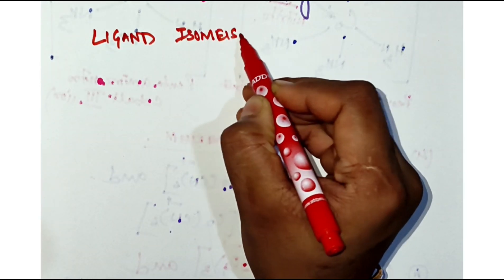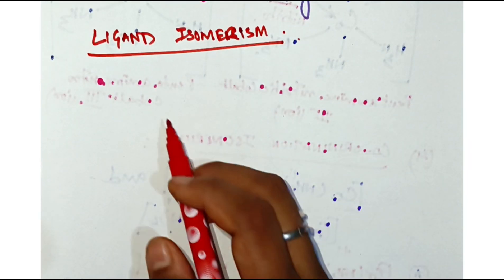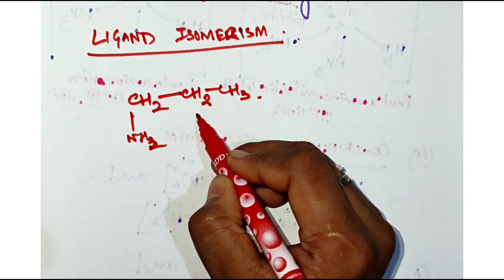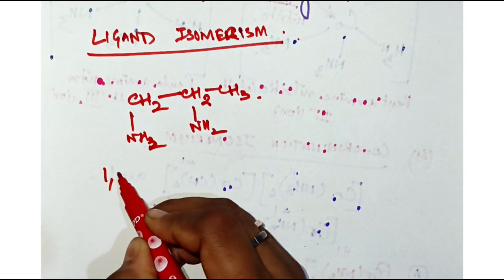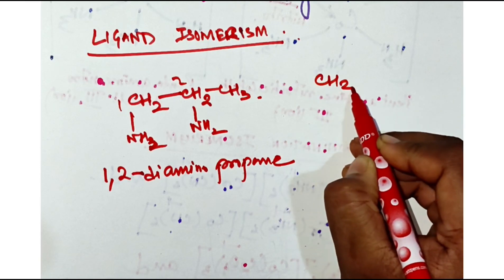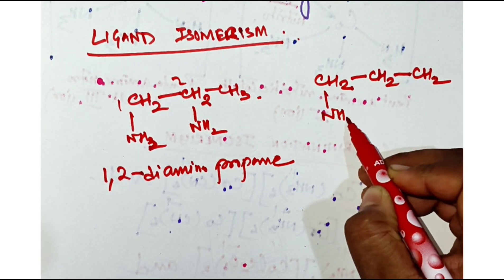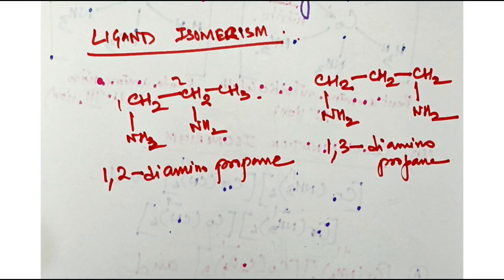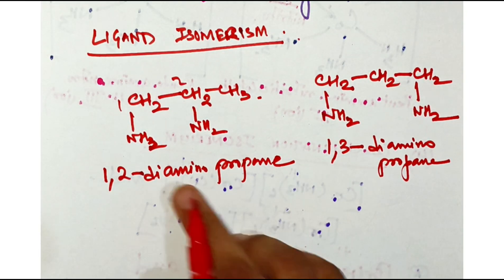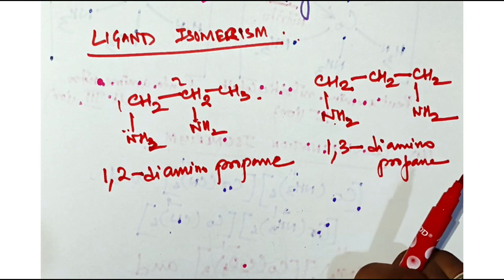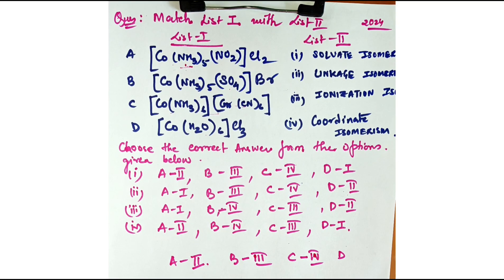There is another isomerism in the same category: ligand isomerism. This arises in complexes where two ligands are isomers of themselves. For example, 1,2-diaminopropane and 1,3-diaminopropane — the amino groups are at positions 1 and 2 versus positions 1 and 3. These types of complexes are called ligand isomers.